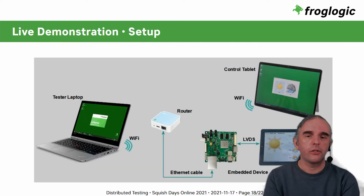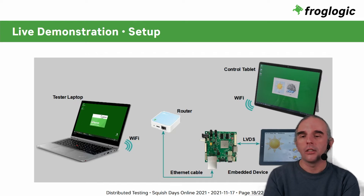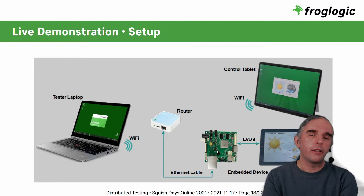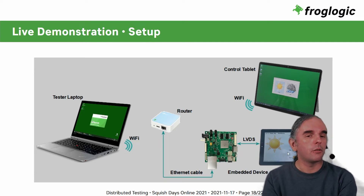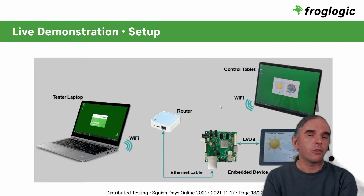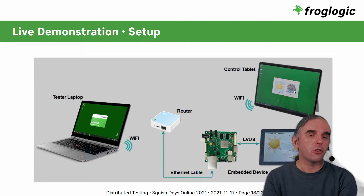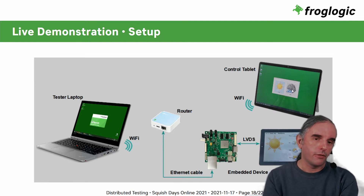The hardware setup looks like this: we have the tester's laptop with Squish IDE and Squish Runner, the embedded device running the main application, and the control tablet providing the weather data. Via the network, the embedded device communicates with the control tablet, which provides all the simulated weather data.